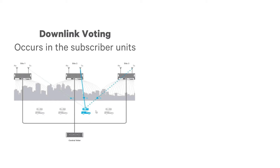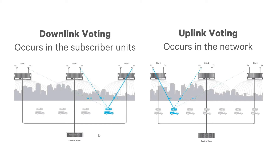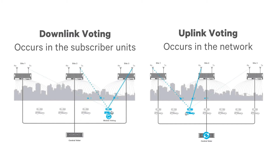How does the whole system — that is, subscriber units and repeaters — ensure that generally the radio user gets the best possible reception? The answer is a process called voting, which can occur in the subscriber units, where it's called downlink voting, or in the network, where it's called uplink voting, or in a combination of both.